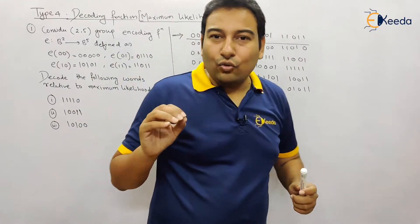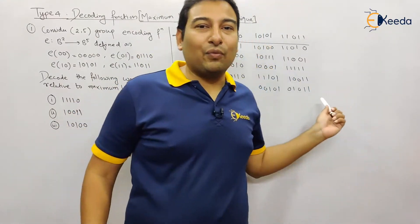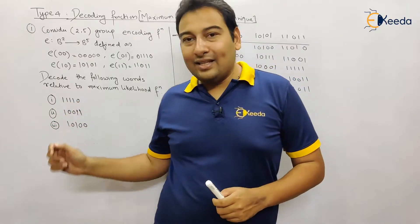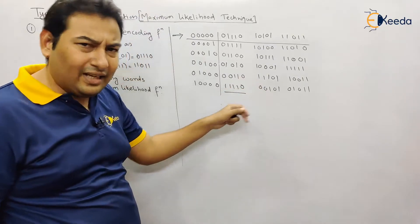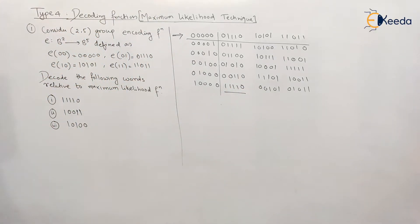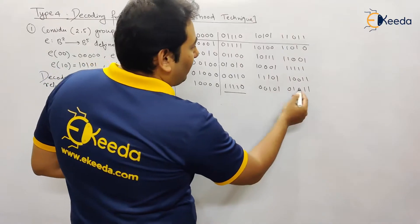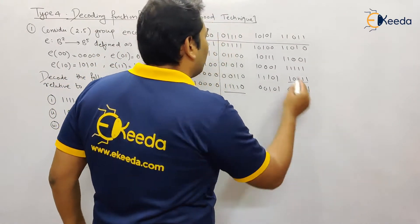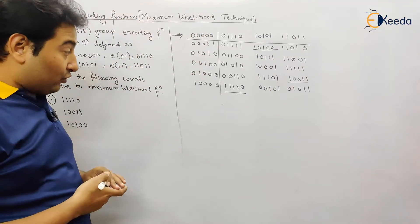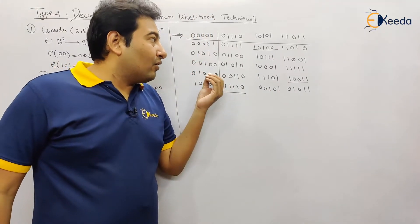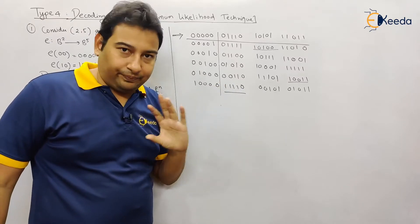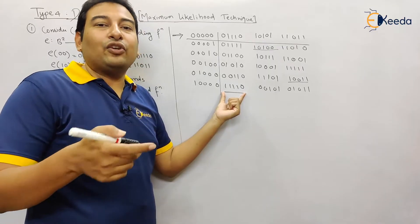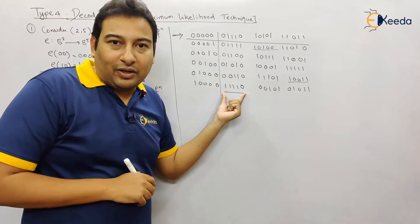Now the next step: find each given sequence in the table and underline it. Let's find 41 — actually 410 — in the table. We check and underline it. Next: 10011, and finally the last code is 10110. We have underlined the codes which are asked. Now we need to decode these, meaning we need to find the encoding function for each particular code.